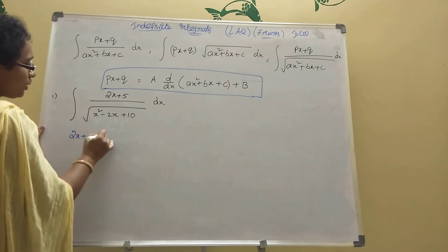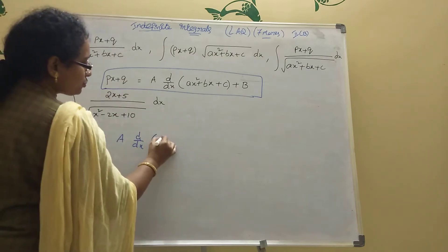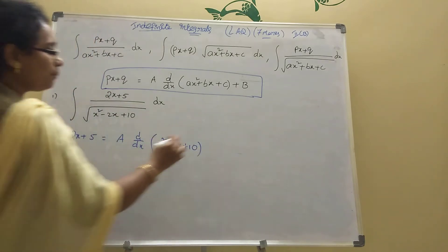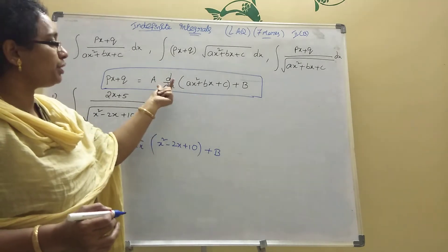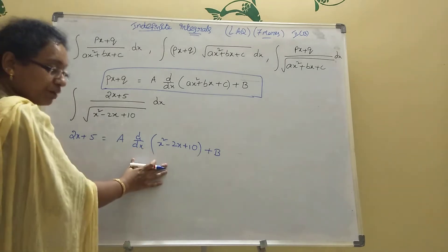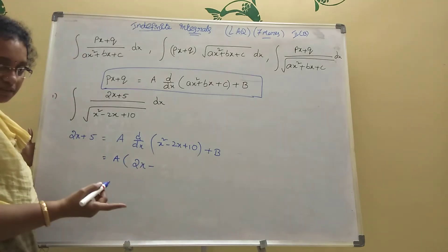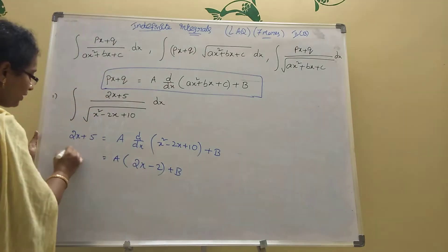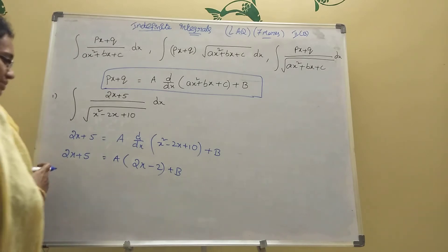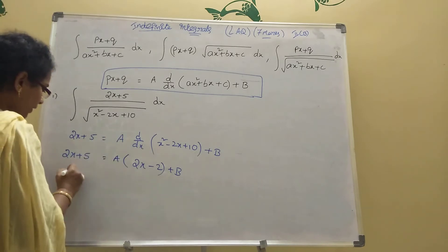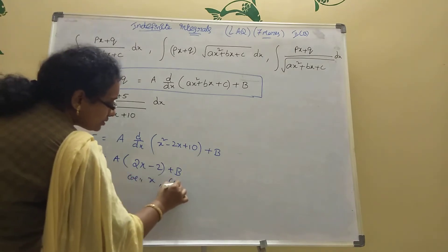2x + 5 equal to a into d/dx of denominator - means here x² - 2x + 10 - plus b. Root also there, you write here like this only: a into d/dx of denominator plus b. We should find first the derivative of the denominator term.